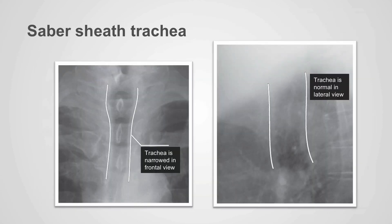Often, with aging or with chronic obstructive pulmonary disease, the lateral dimensions of the trachea can decrease with an increase in the anterior-posterior dimension. The analogy is pinching a tube between your thumb and index finger, causing narrowing in one dimension and expansion in the other. This appearance is called a saber sheath trachea and should not be mistaken for tracheal stenosis.